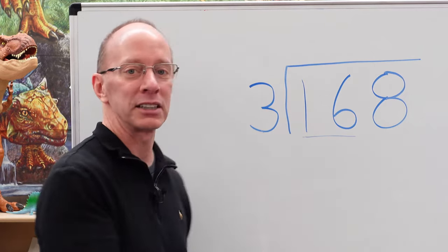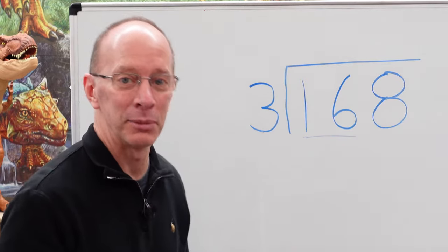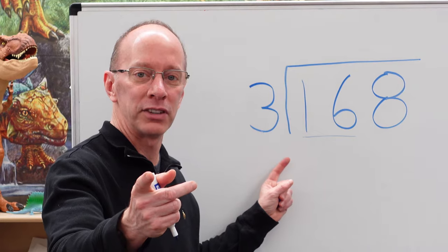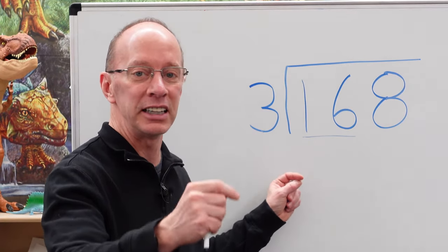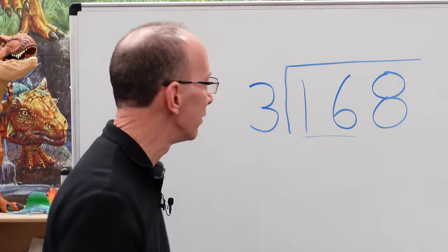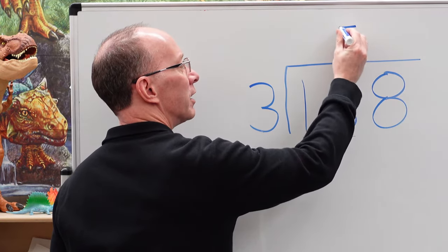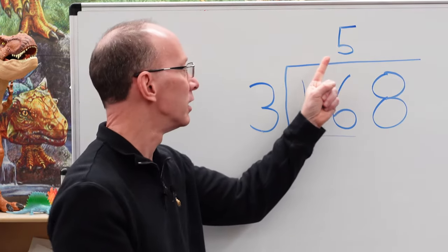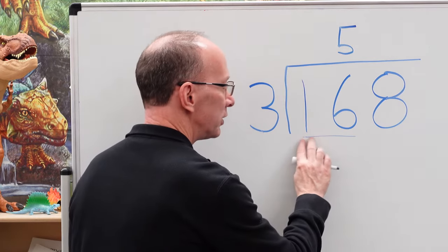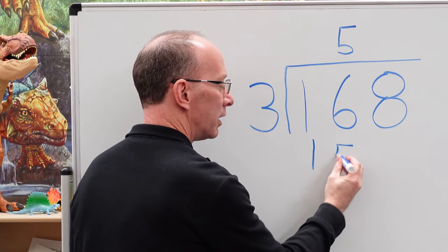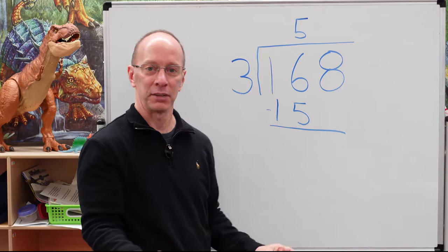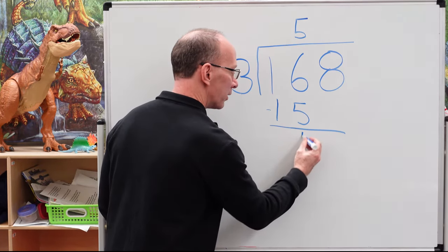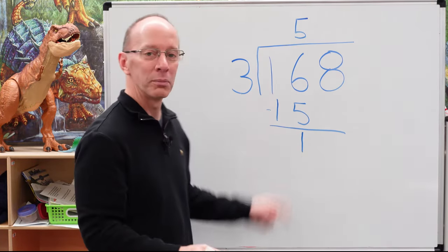So how many times can I put three into 16? And that is where your multiplication facts come in hand. Let's start with a high number. Three times four is 12. Three times five is 15. Three times six is 18, too high. Let's leave it at three times five. So let's go ahead and put the five right here. I'm dealing with this number right here. Five times three equals 15. So I'll put the 15 right here. And then we use subtraction. Let's go ahead and subtract six minus five, one. And of course, one minus one is zero.